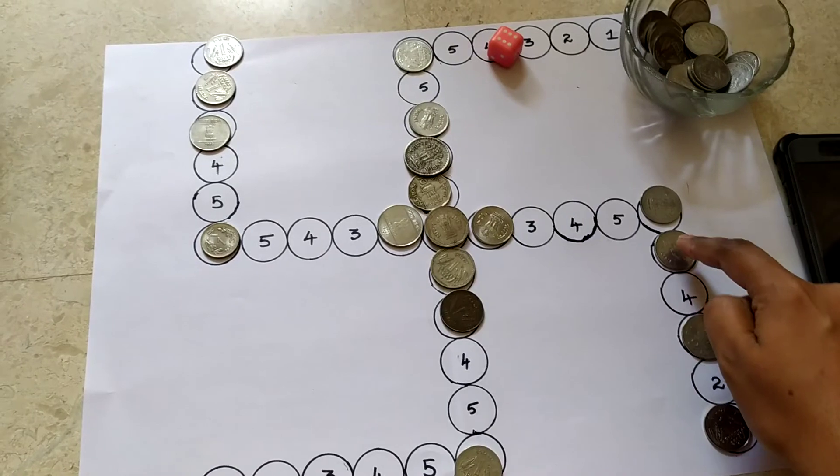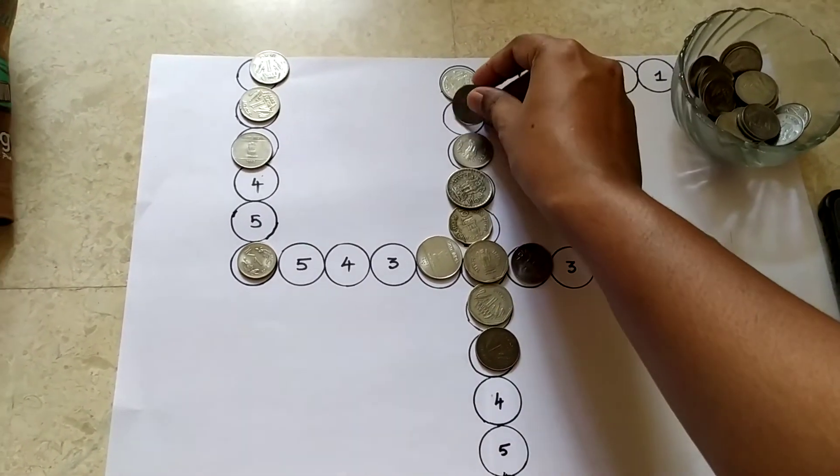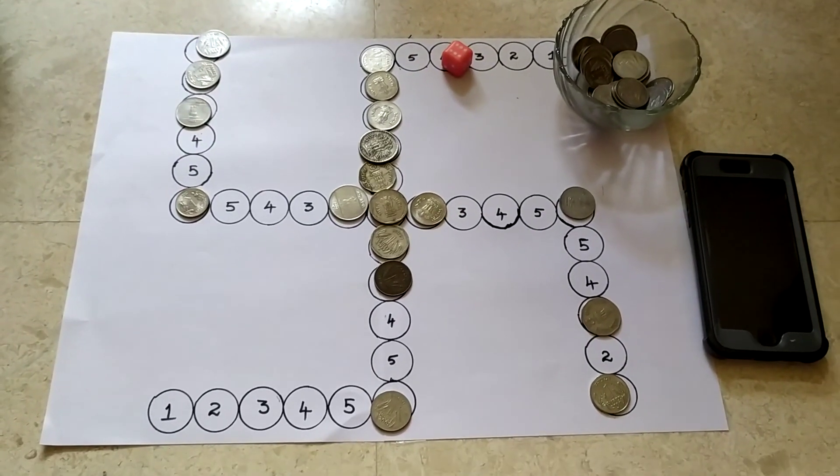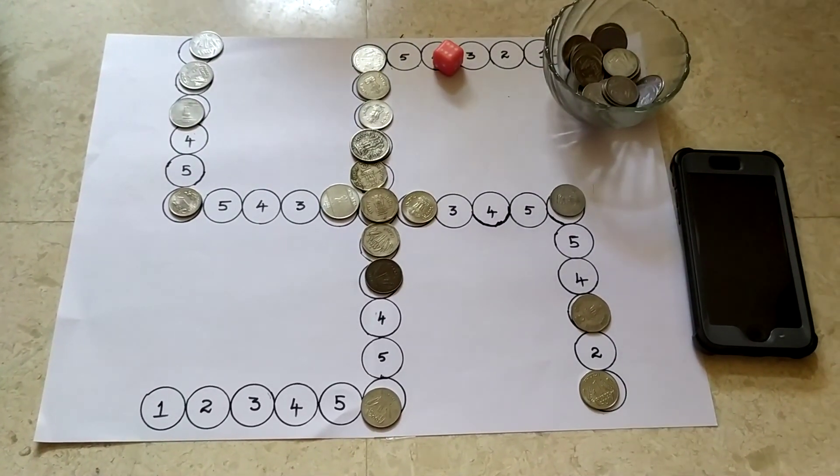See, you had 5 here. If you've kept this 5 here, you could have got 5 points. Okay? So the next player can play now. Let's check.